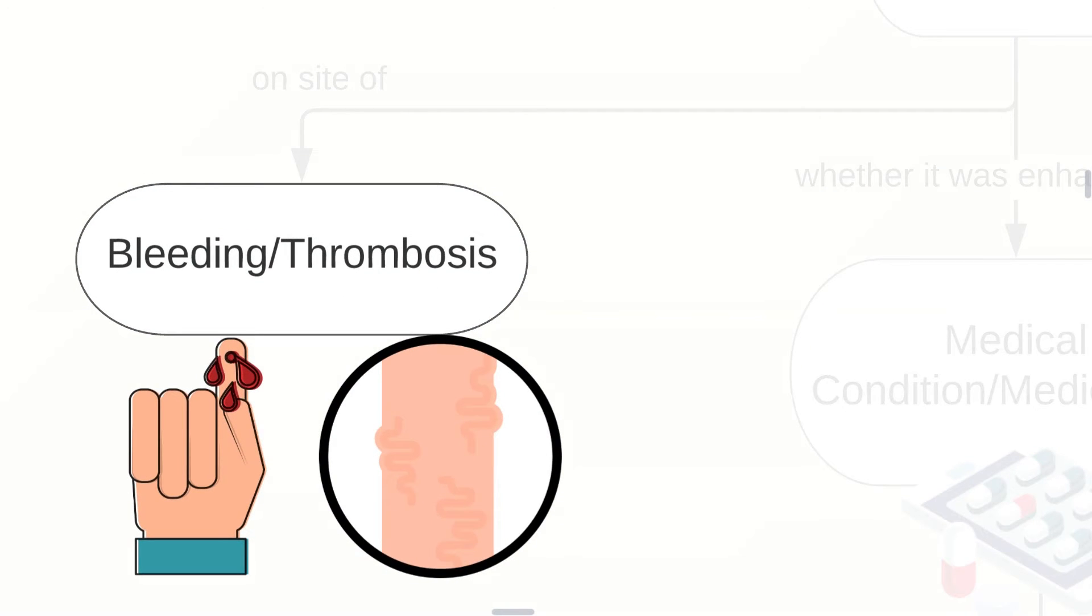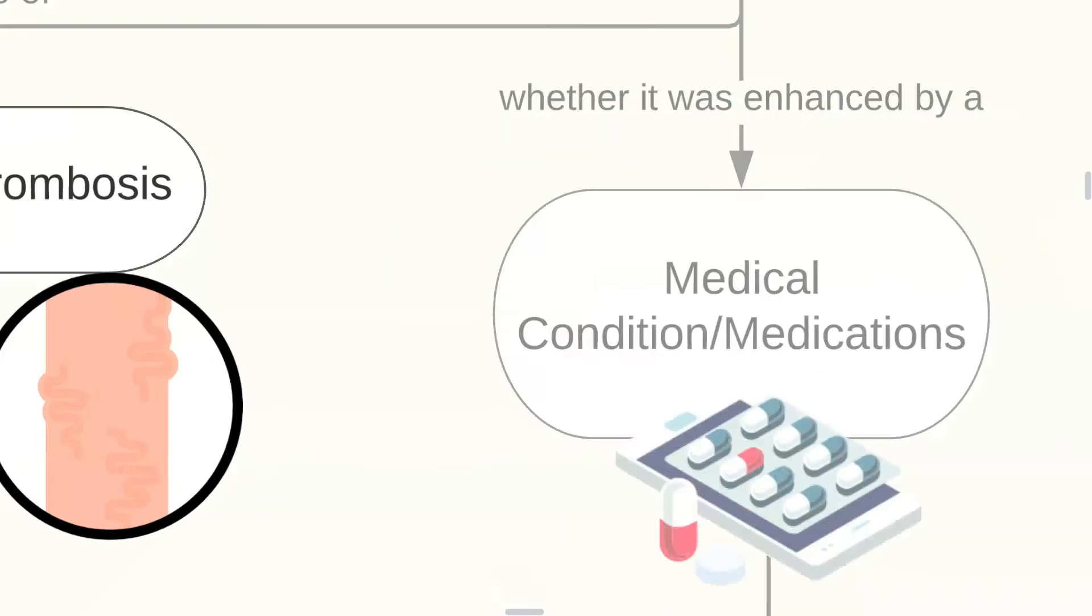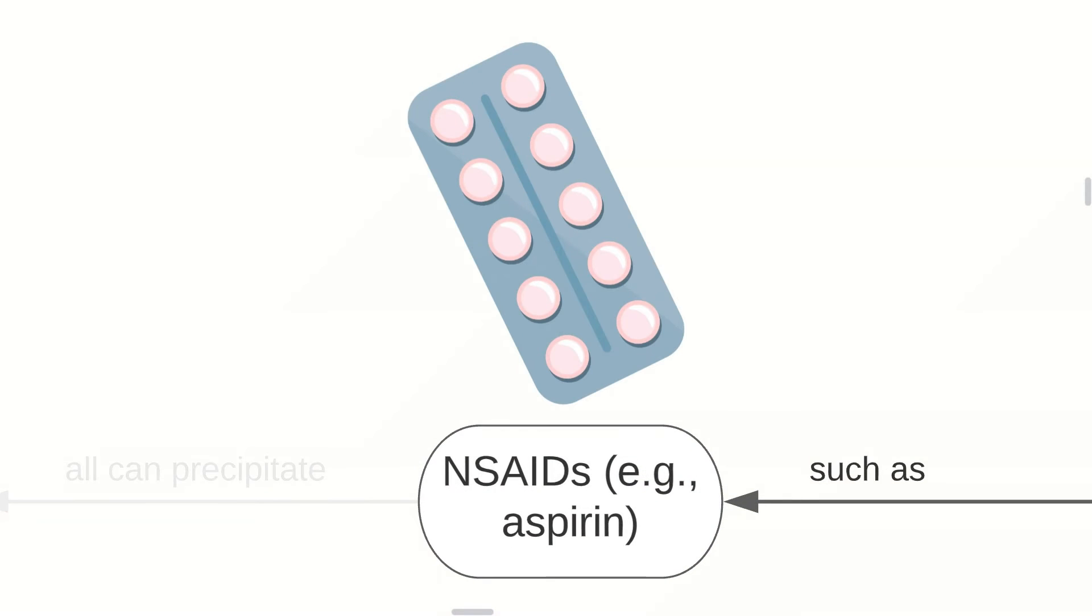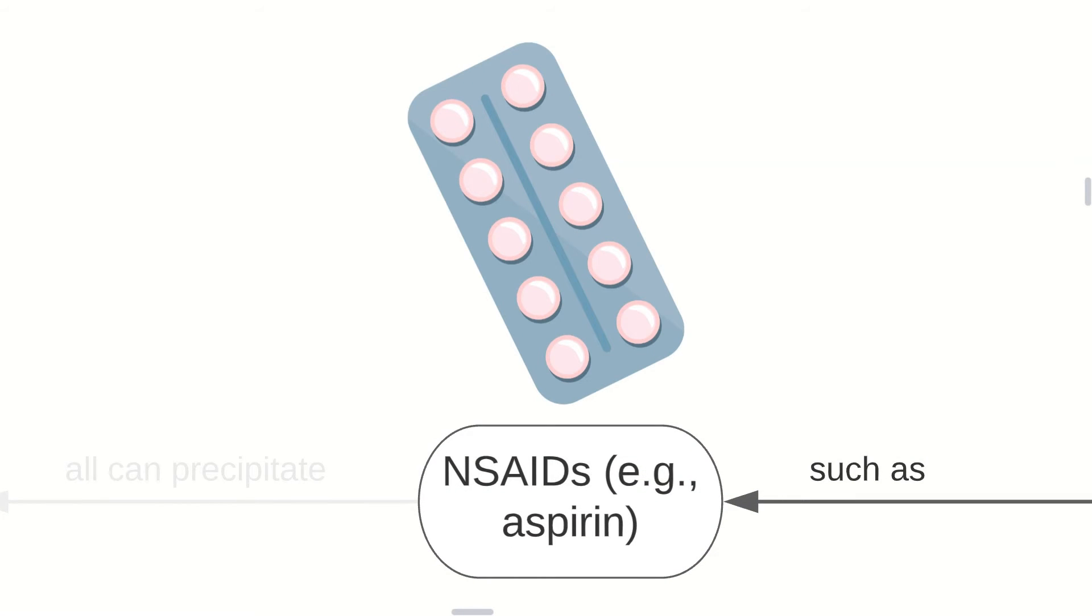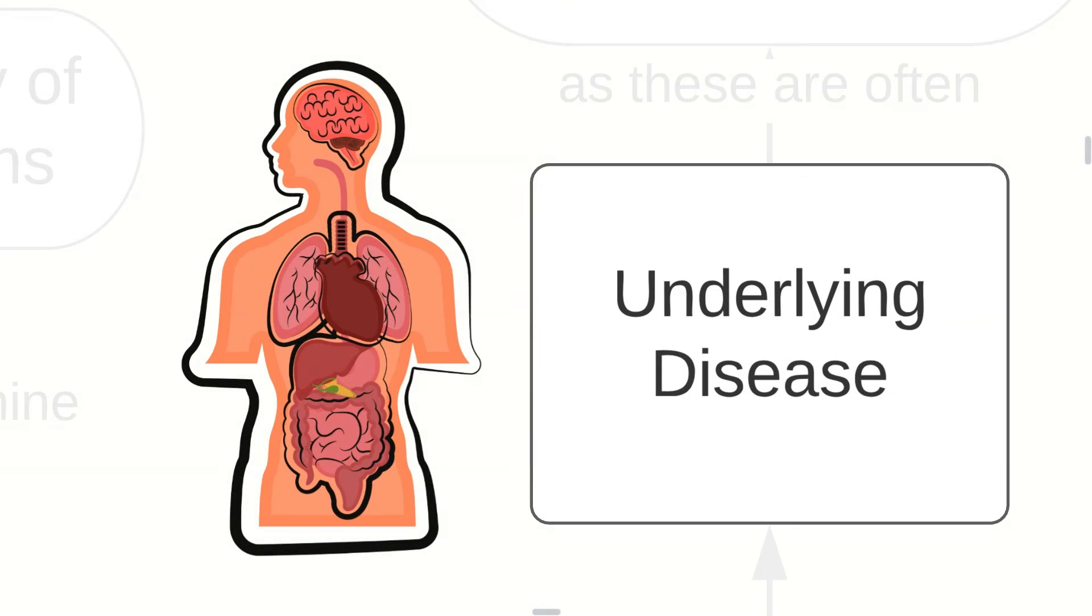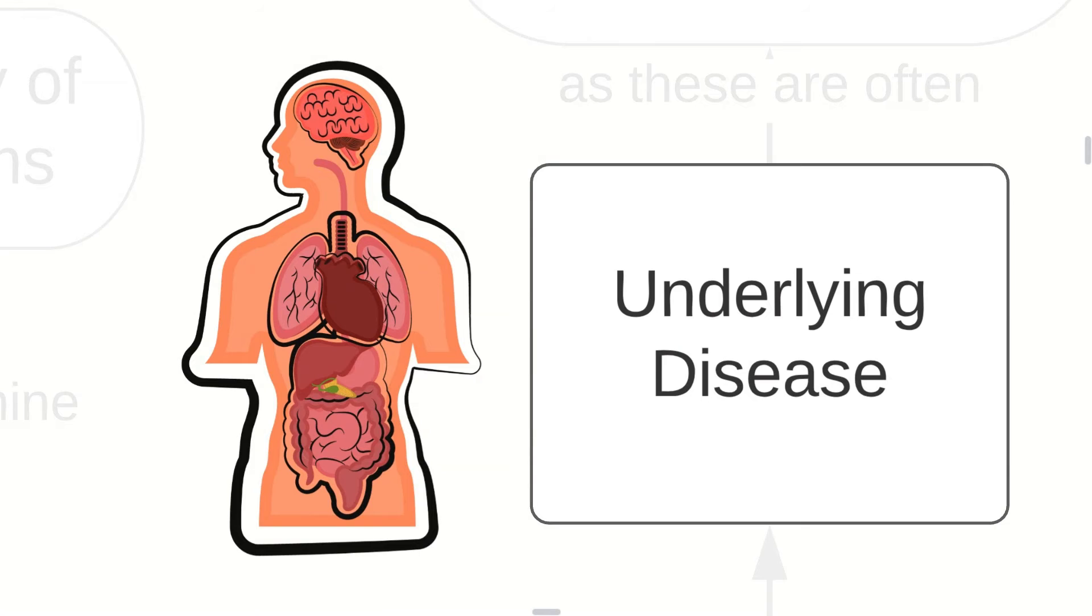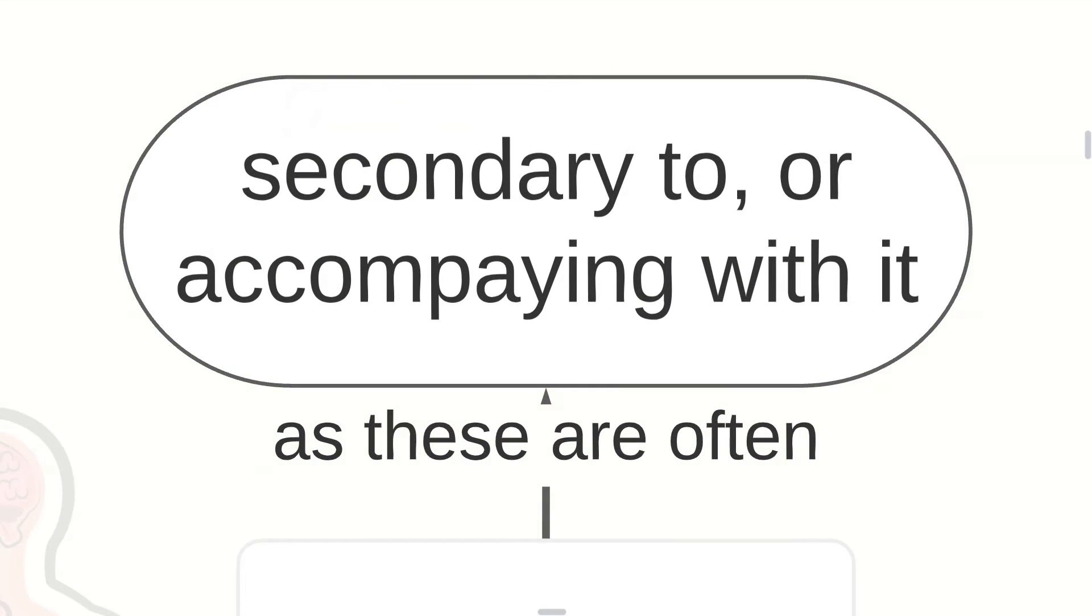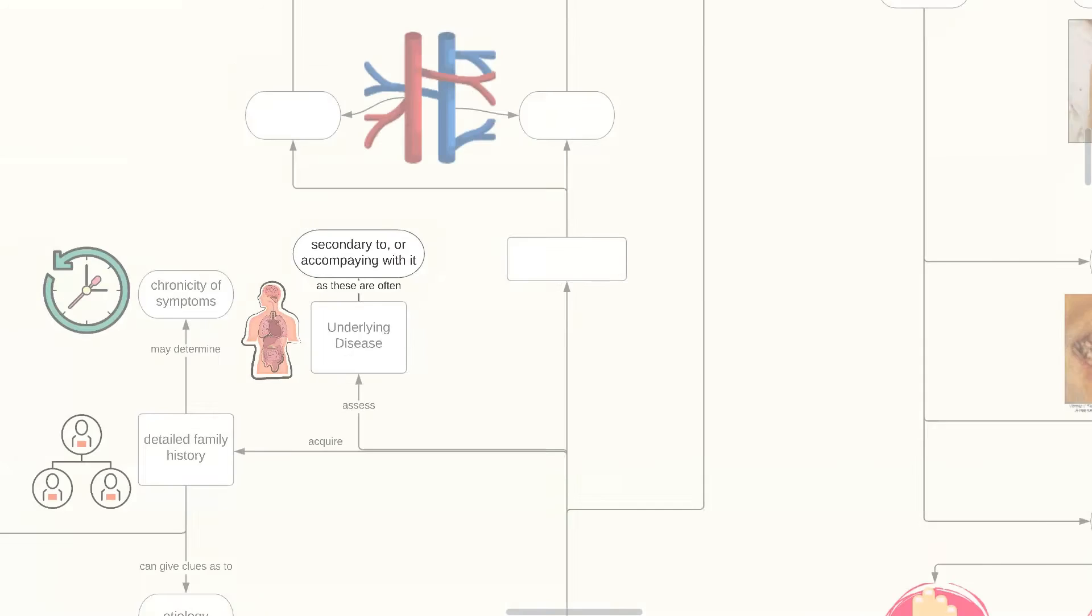Family history can give clues to the etiology of the disorder, depending on the site of bleeding, or thrombosis, or whether it was enhanced by a medical condition or by medications, such as NSAIDs, especially aspirin, all of which can precipitate GI bleeding. Underlying disease must also be pursued in the history, as these are often secondary to or accompanied with bleeding disorders.